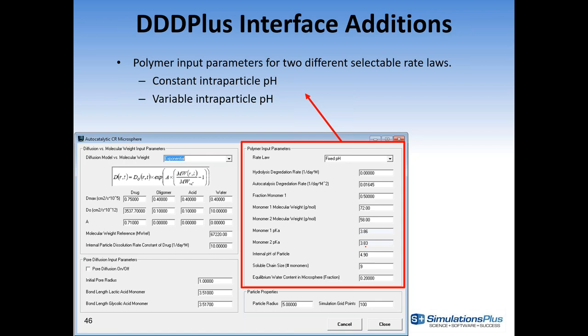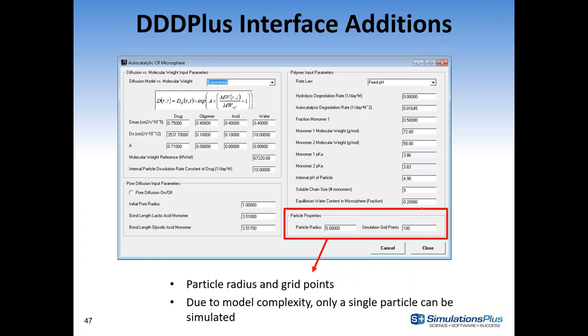You can set polymer input parameters, the rate law for degradation, hydrolysis and autocatalysis degradation rates, the fraction of lactic acid in the polymer, molecular weights of each monomer, pKas of each monomer, and internal pH. We have a constant pH model — we pulled 4.9 from literature measurements — or a variable rate law that calculates pH based on free acid in the system. You can also set the equilibrium water content in the microsphere, soluble chain size of the generated oligomers, and particle properties. Currently the model is limited to a single particle size due to the complexity of five or six coupled partial differential equations solved simultaneously.